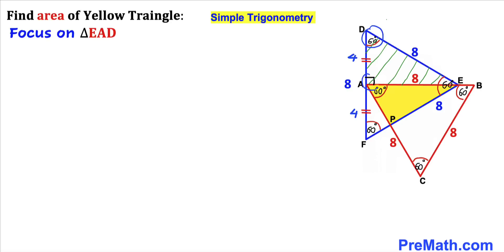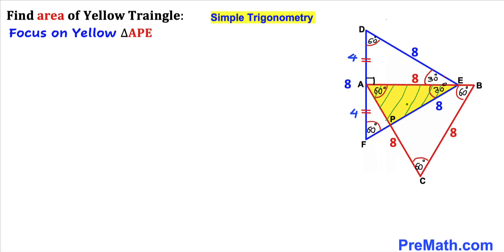Focusing on triangle EAD: we know this angle is 60 degrees and this angle is 90 degrees, so therefore this angle must be 30 degrees. And if this angle is 30 degrees, then this other angle is also 30 degrees, since the whole angle is 60 degrees. Now focusing on the yellow shaded triangle APE: this angle is 30 degrees, this angle is 60 degrees, so therefore this angle must be 90 degrees — it is a right triangle.